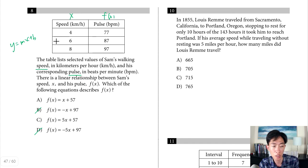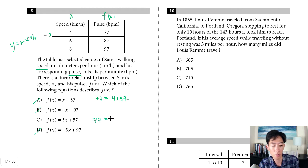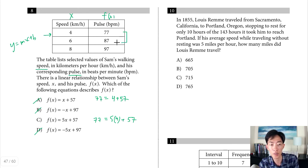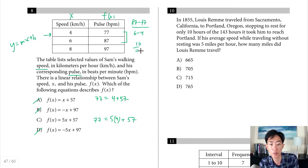Plug in x equals 4 to test: for choice A, 4 plus 57 equals 61, not 77 — so A is out. For choice C, 5 times 4 plus 57 equals 77 — that works, so C is the answer. Alternatively, calculate the slope directly: change in y over change in x gives (87 minus 77) divided by (6 minus 4) equals 10 over 2, confirming the slope is 5.